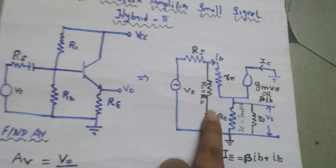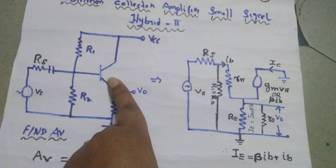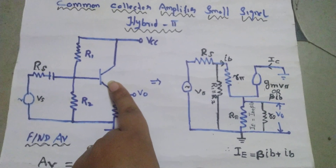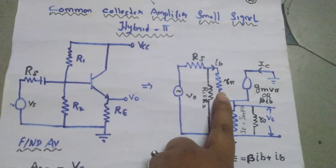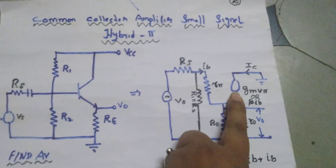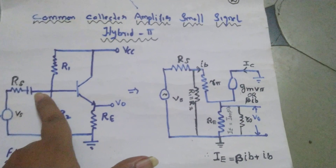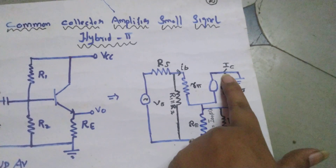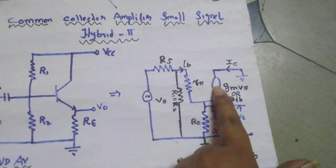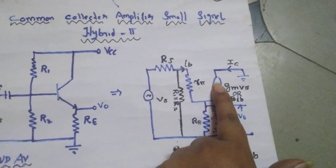In small signal analysis, the transistor is replaced by one resistance and one current source. The resistance is R-pi, and the current source represents the controlled current. In this common emitter model, the input current is the base current IB and the output current is the collector current IC.